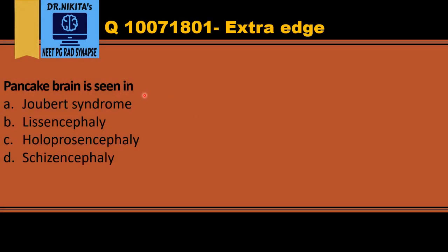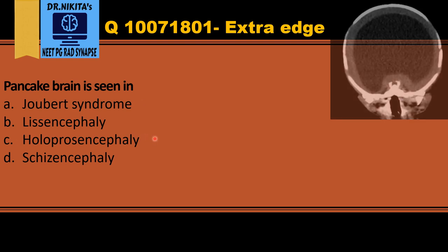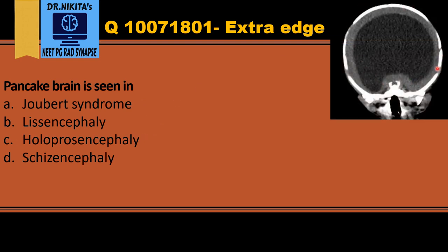Pancake brain is seen in holoprosencephaly — this is the pancake appearance of the brain. Holoprosencephaly means 'holo' (entire) + prosencephaly (fusion of frontal lobes). There are variants from severe to mild: alobar, semilobar, and lobar. Alobar is the most severe, where we have fusion of the entire brain. We see a fluid-filled structure — a monoventricle — surrounded by fused brain parenchyma with no falx cerebri or separation. This is pancake brain.